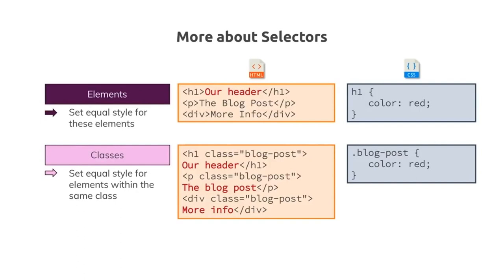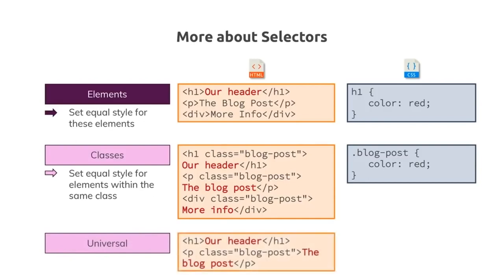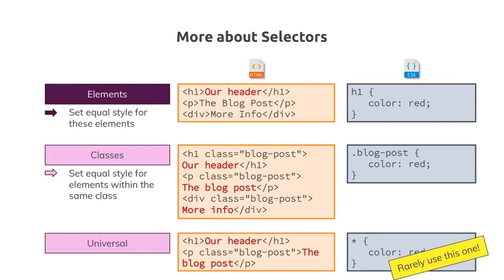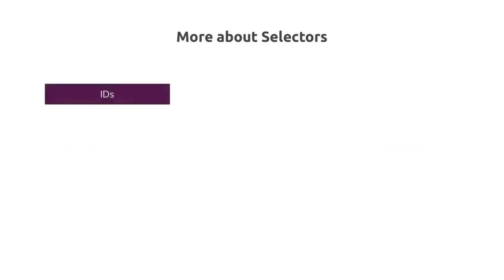Sometimes you want to set a style for every element on the page — that's the universal selector using the star symbol. You can style every element, though you rarely use this because you rarely want the same style on every single element. There is one specific use case we'll see later. There are also ID selectors, which select an element by its ID attribute. Since an ID should only exist once on a page, it applies the style to just one element.